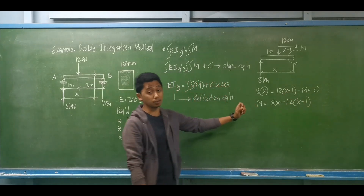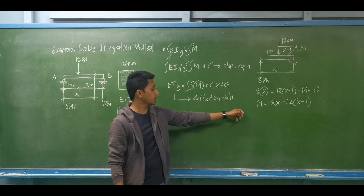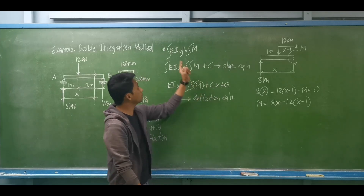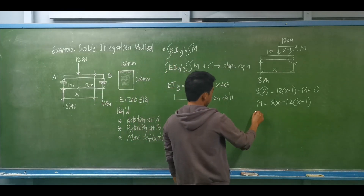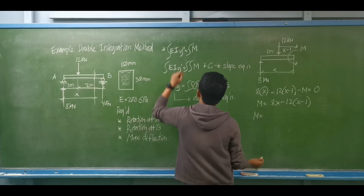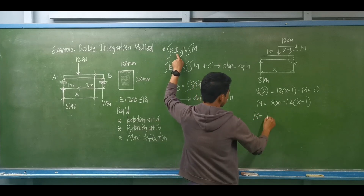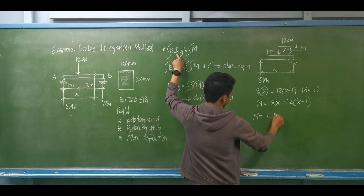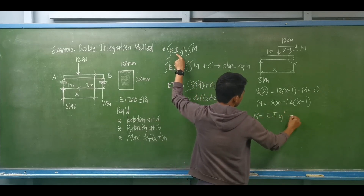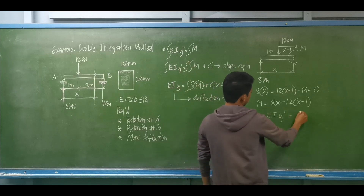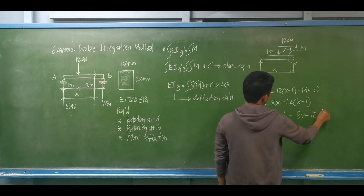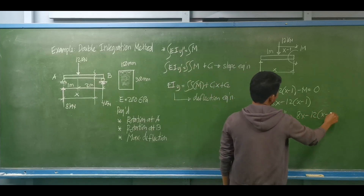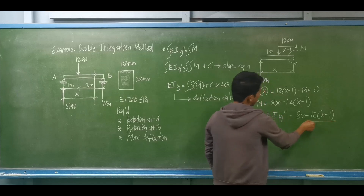So the moment equation is now equal to 8x minus 12 times (x minus 1). This will be our moment equation. The equivalent is: EI y double prime is now equal to 8x minus 12(x minus 1). We are now ready to perform the first and second integrations.